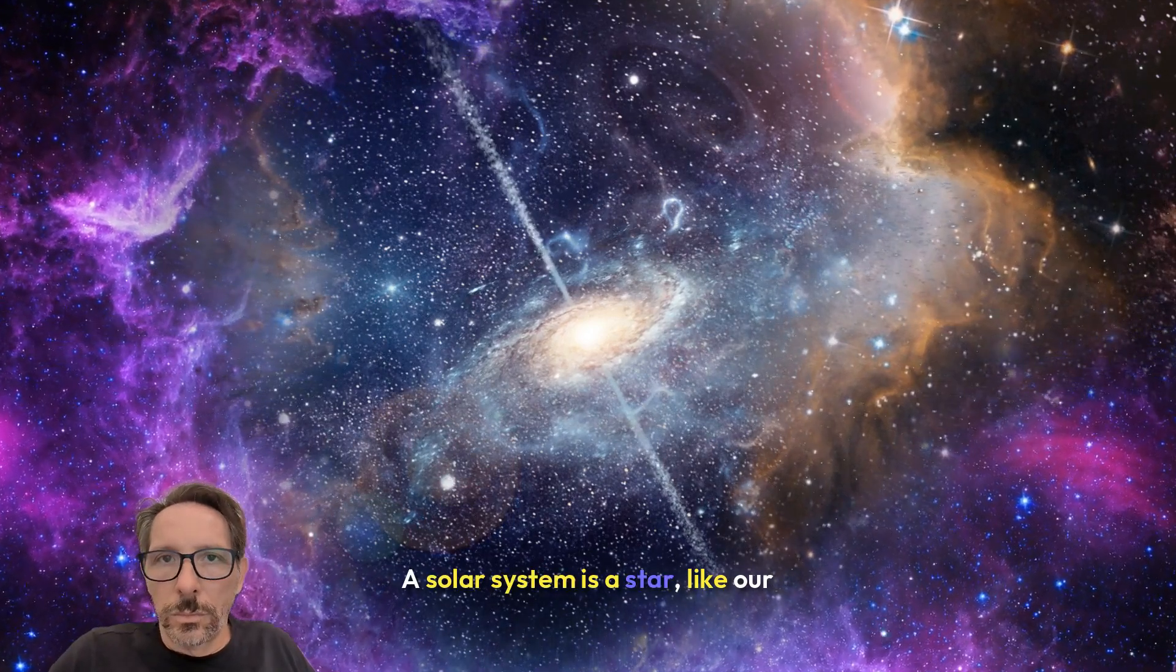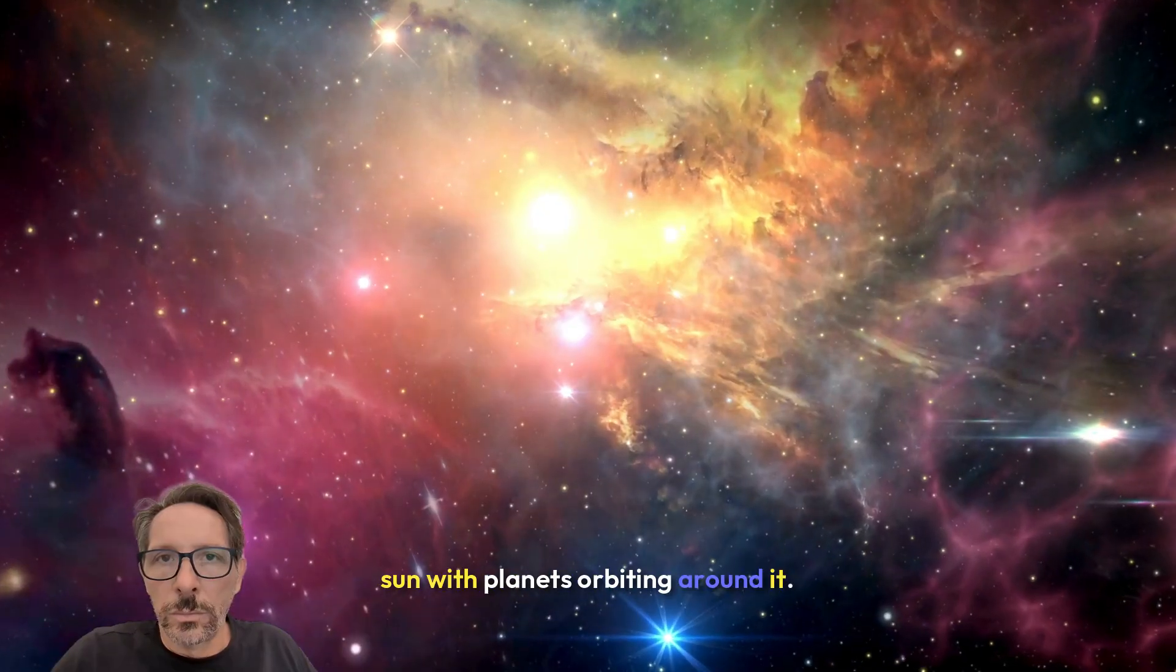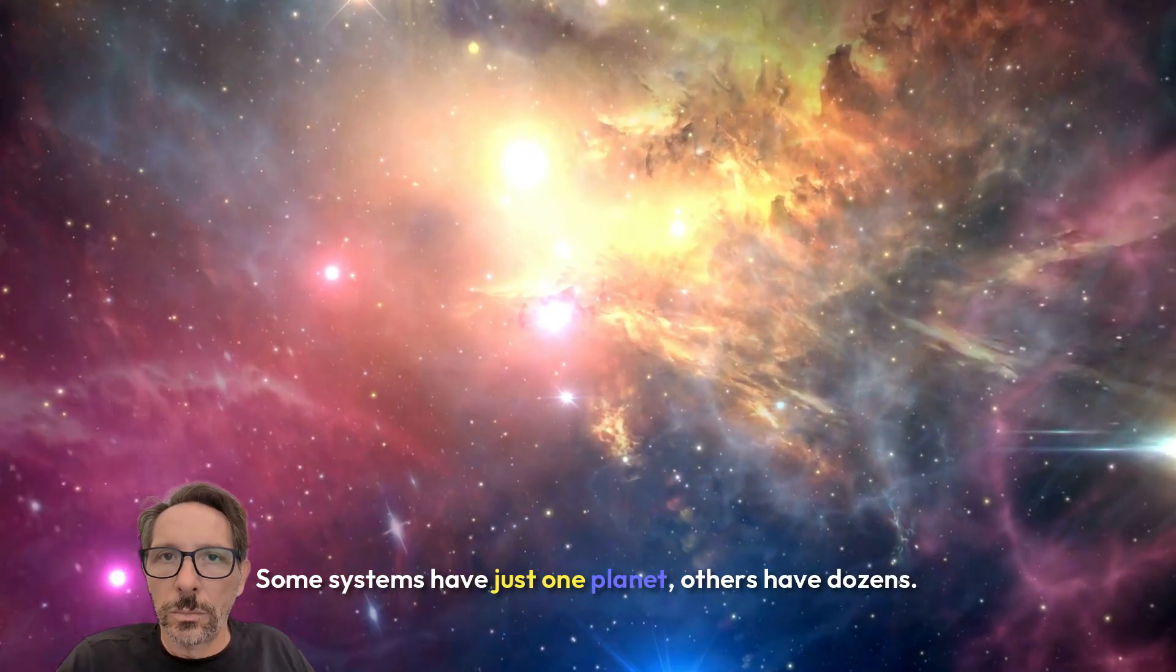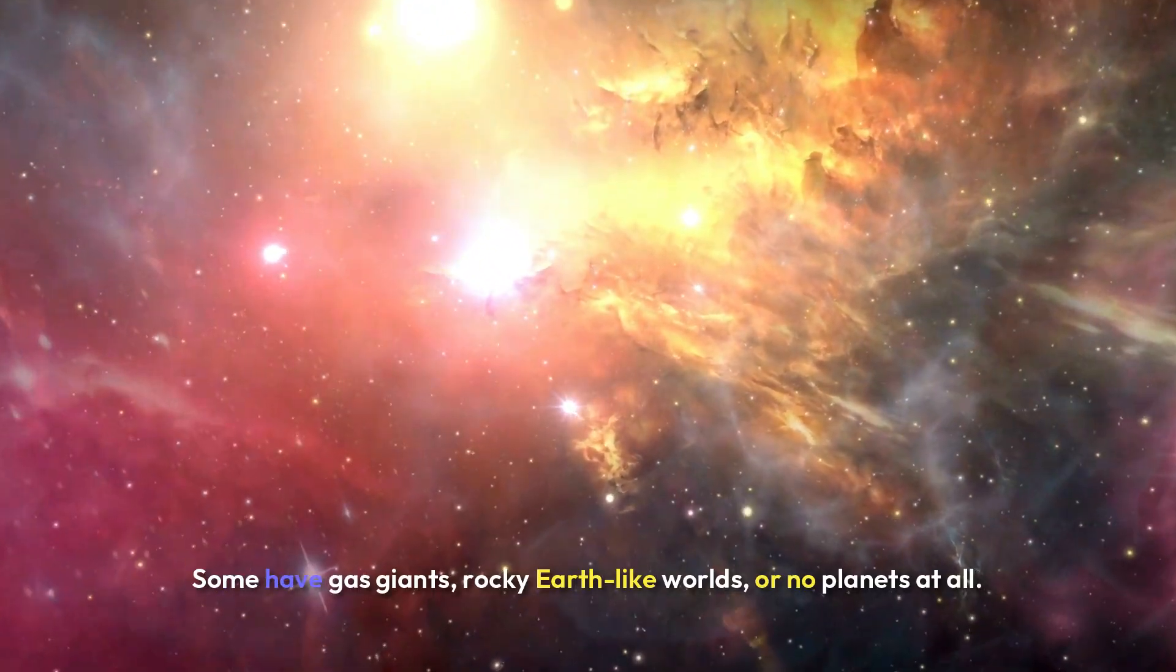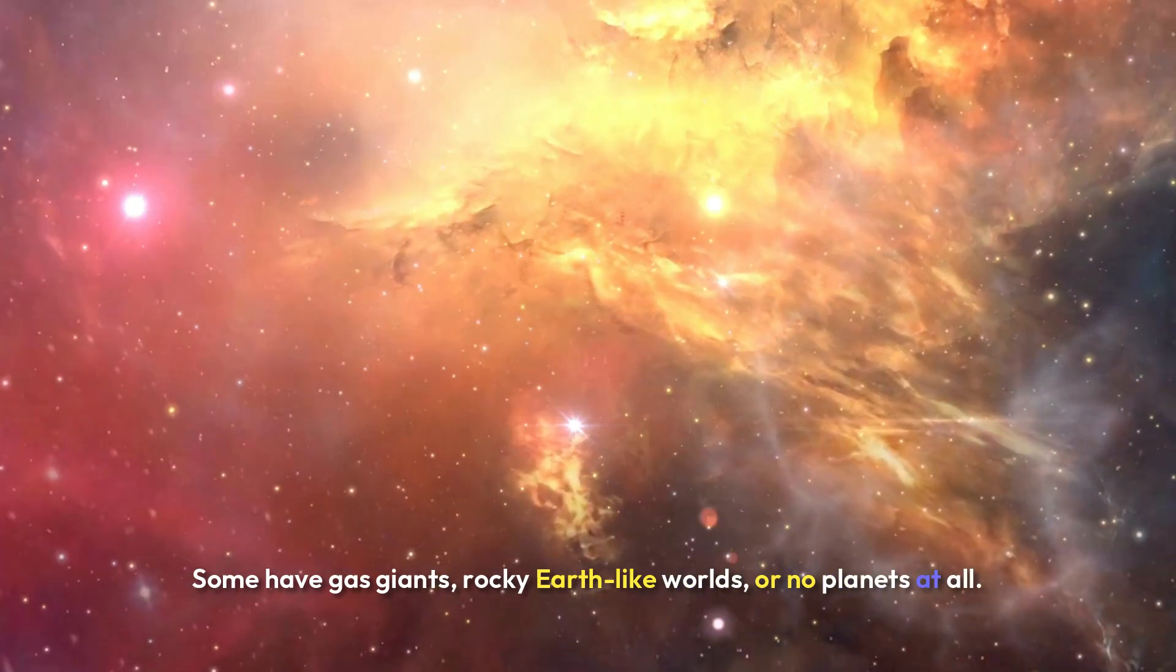Let's start from the basics. A solar system is a star, like our sun, with planets orbiting around it. Some systems have just one planet. Others have dozens. Some have gas giants, rocky Earth-like worlds, or no planets at all.